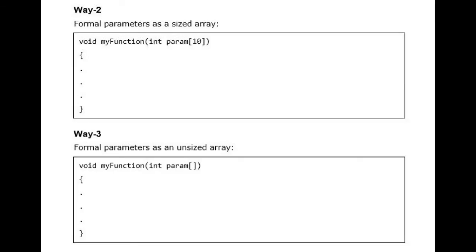Way 2: Formal parameters as a sized array - void myFunction(int param[10]). Way 3: Formal parameters as an unsized array - void myFunction(int param[]). Now consider the following example function which takes an array as an argument.